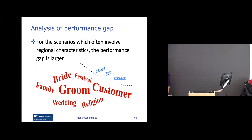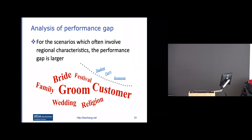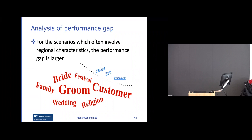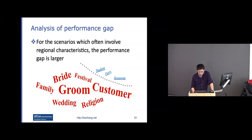Looking at what concepts the model gets wrong — the largest gap appears for questions about weddings, festivals, and religion. For more neutral topics like students, parties, and restaurants, the model performs more uniformly across regions. This confirms the model may not be able to deal with geo-diverse common sense.